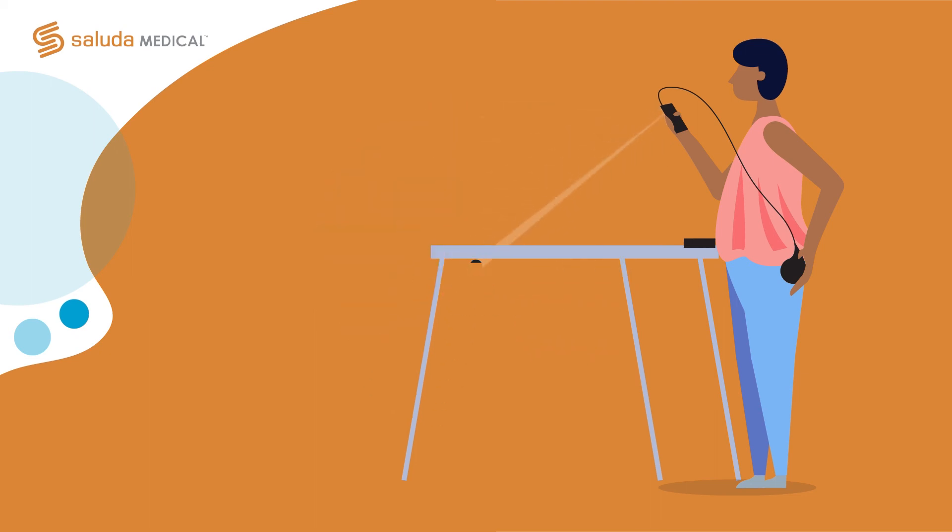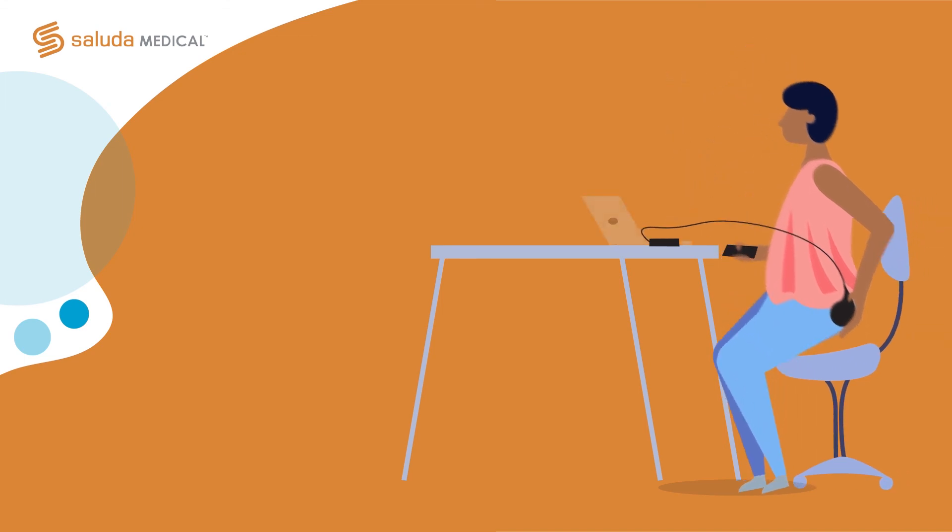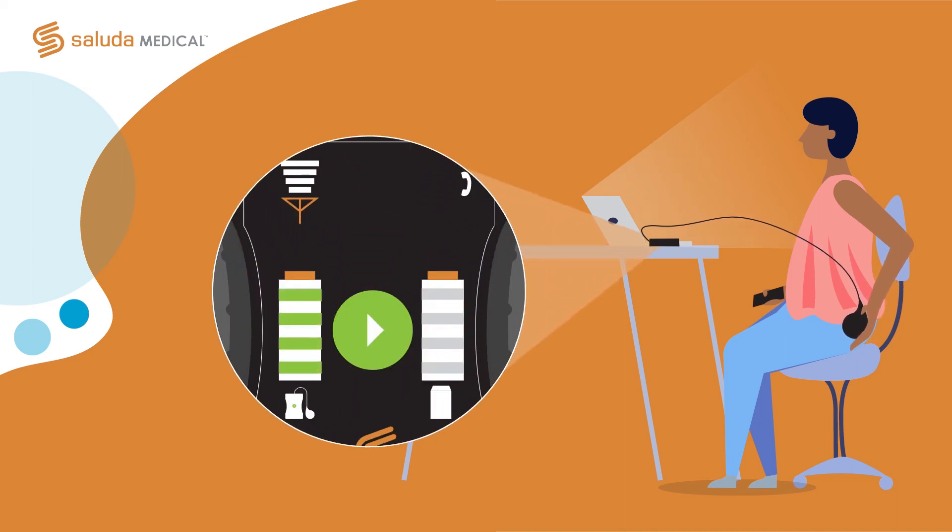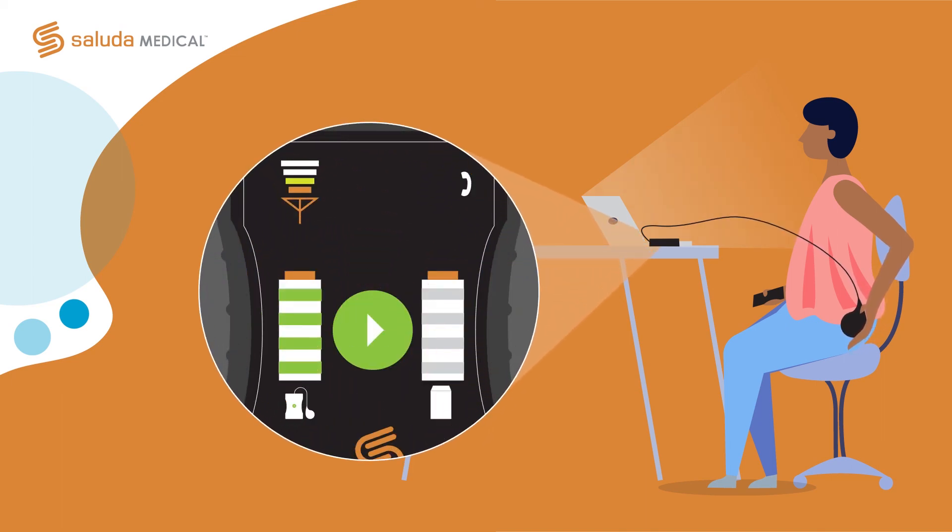You may turn therapy on once charging has started. Keep the charger coil in place over the implant or battery until you have finished charging. The charger will beep once if the charger coil moves out of range. Realign the charger coil so the charging link indicator shows three or four bars.